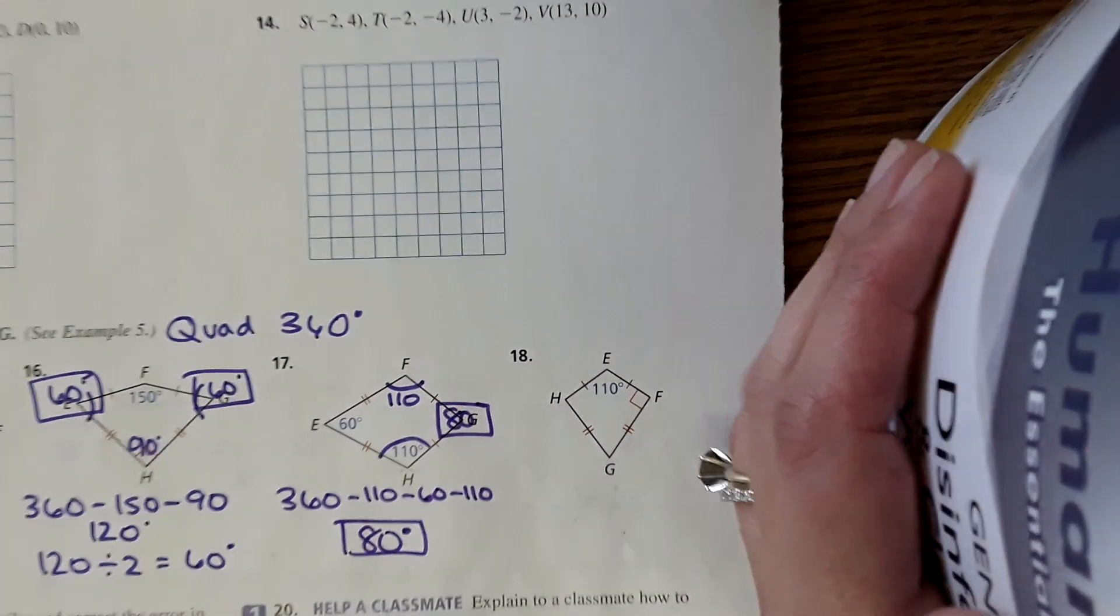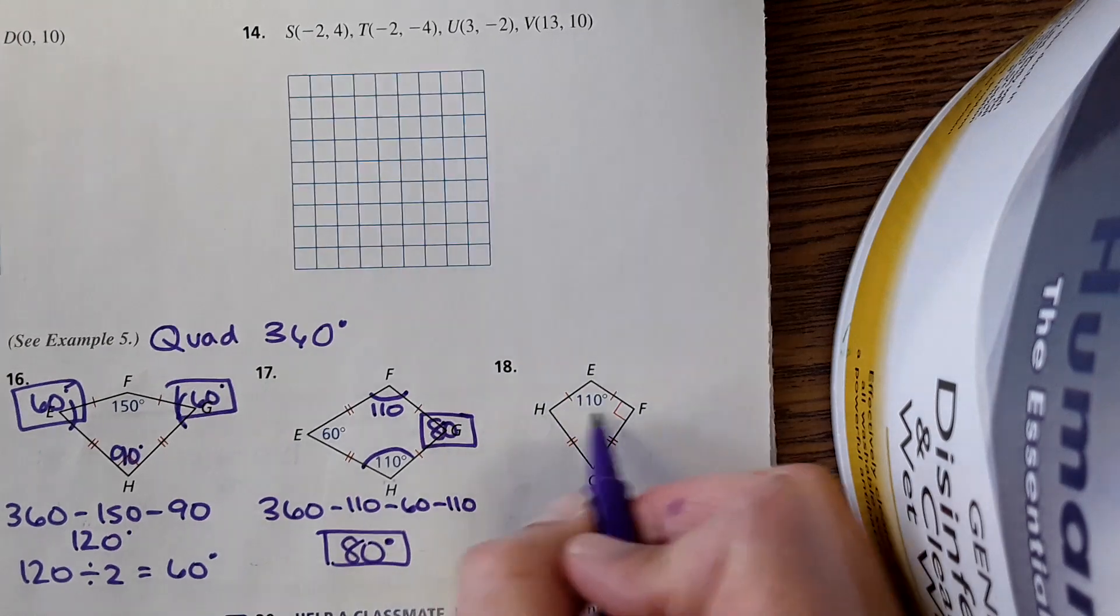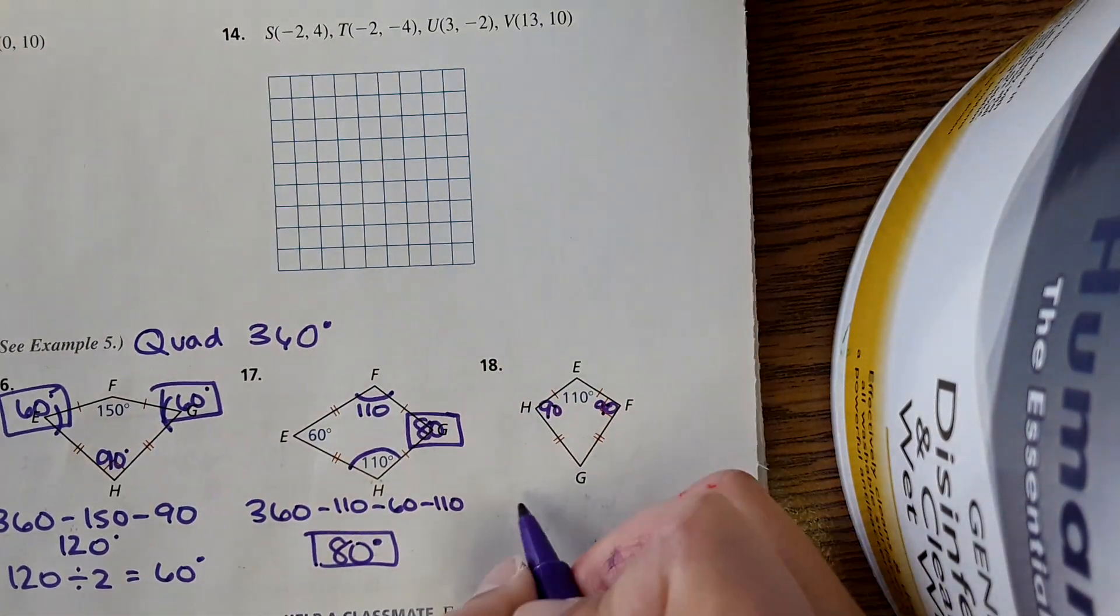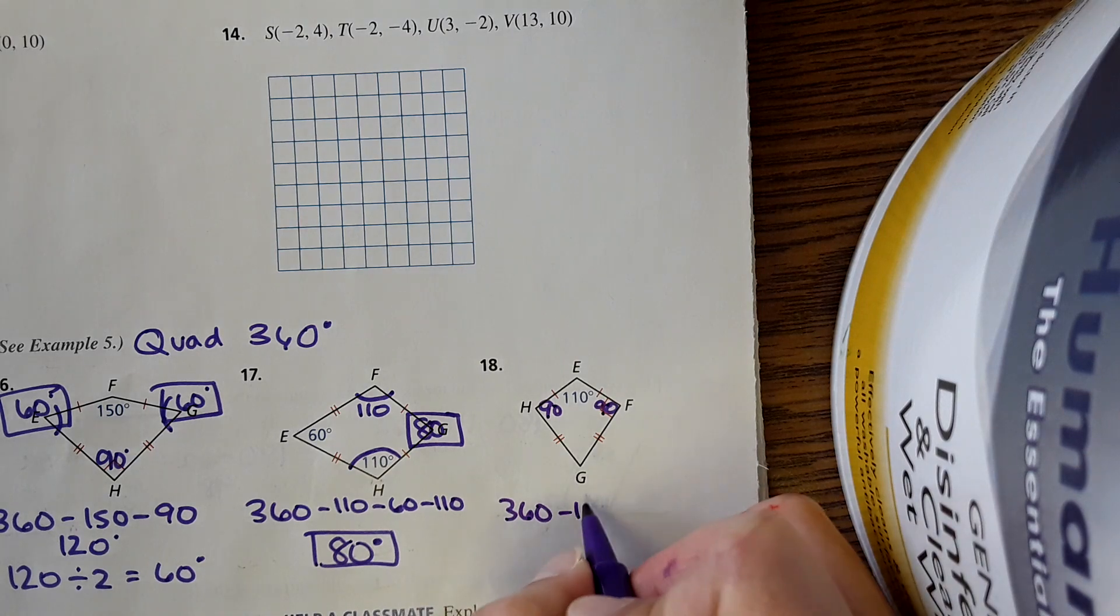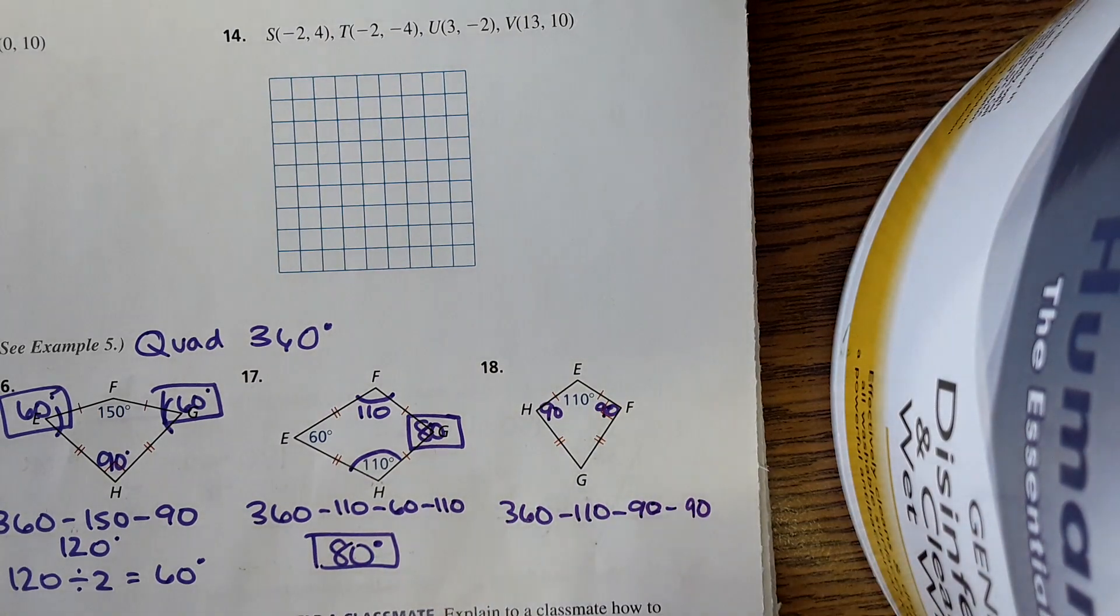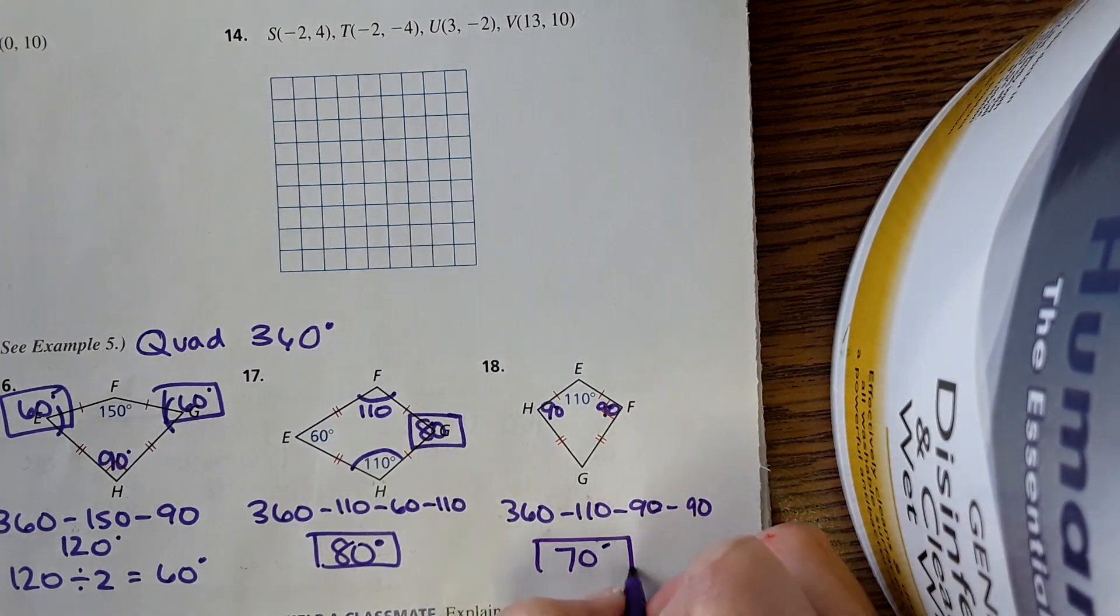And number 18 is that same concept there. They showed a little square, so that means this is 90, this is 90. 360 minus 110 minus 90 minus 90, and it's 70 degrees.